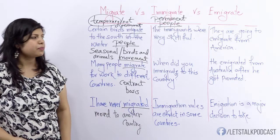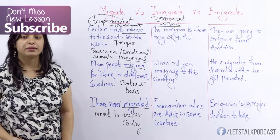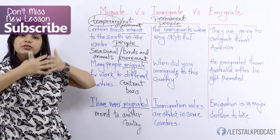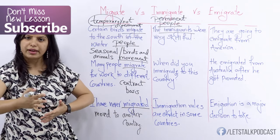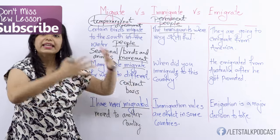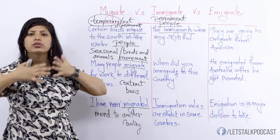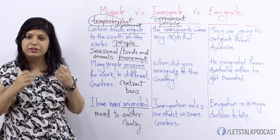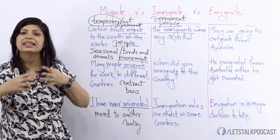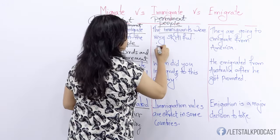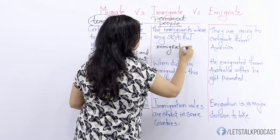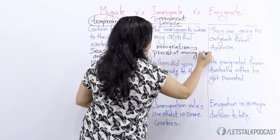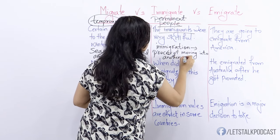Let's look at the very first example: the immigrants were very skillful. So who are immigrants? Immigrants are people who move permanently from one country into another country. Remember when I was telling you about my friend — she's moved from her country into another country. So if she moves from America to Australia, for Australia she would be considered an immigrant because she's moved into Australia. She's permanently moving, she's moved in. So she's an immigrant, and the process is termed as immigration, which is the process of moving into another country.